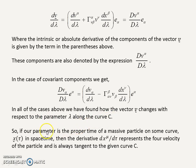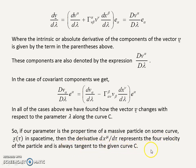Our parameter, as mentioned earlier, could be anything. It could be the proper time τ of a massive particle on some curve. In that case, the derivative dx^μ/dτ represents the 4-velocity of the particle and is always tangent to the given curve.